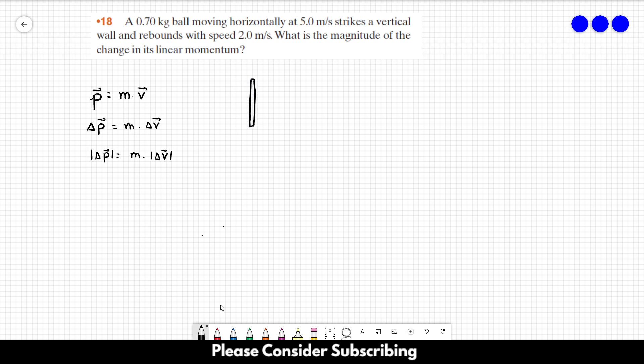We have initially a ball moving towards the wall with an initial speed of 5 meters per second, then it hits the wall and goes in the other direction.